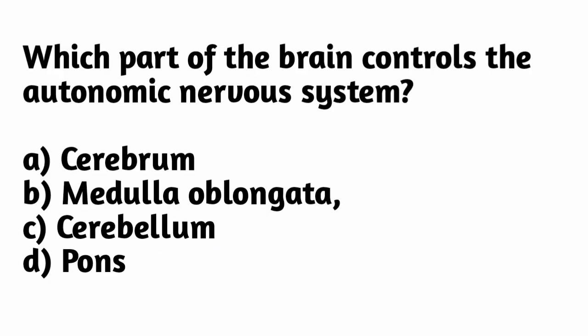Which part of the brain controls the autonomic nervous system? The correct option is option B: medulla oblongata.